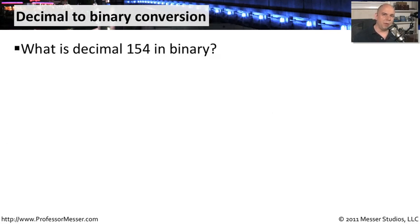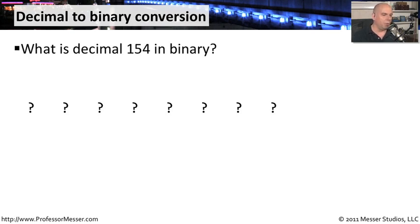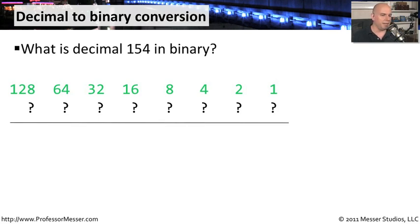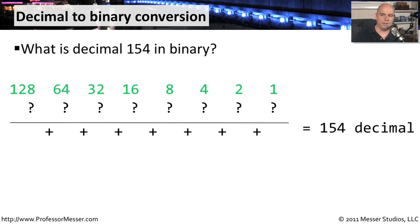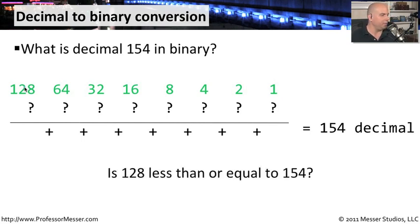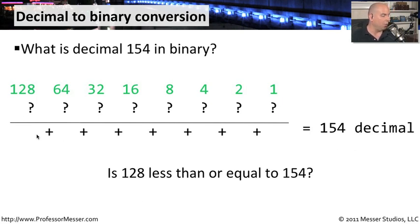Now let's reverse this — start with a decimal number and convert it to binary. Since we already know the basic idea, it should be relatively straightforward. We can't write out the bits yet because we don't know what they are, but we put our conversion chart on top and note the target number to the right, which is 154. We start on the far left and ask: is 128 less than or equal to 154? It absolutely is, so we put a 1 in that position.